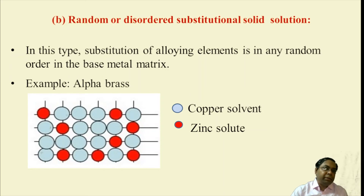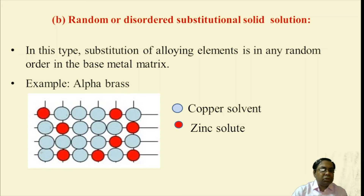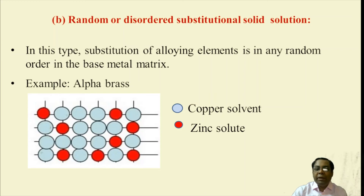In the random or disordered type substitutional solid solution, the substitution of alloying elements is in a random or disordered manner within the base metal matrix. An example is alpha brass, where copper is the solvent and zinc is the solute. The zinc solute is randomly distributed over the copper solvent matrix, not mixed in a homogeneous manner.